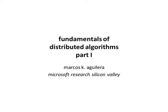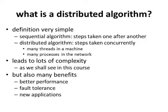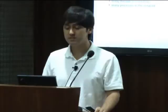Let me start with a very basic question: what is a distributed algorithm? The definition is actually very simple. If you think of a sequential algorithm as being one where processes take steps one after the other, a distributed algorithm is one where the steps can be taken concurrently — for example, many threads executed at the same time within a machine, or many processes executing concurrently across multiple machines in the same network.